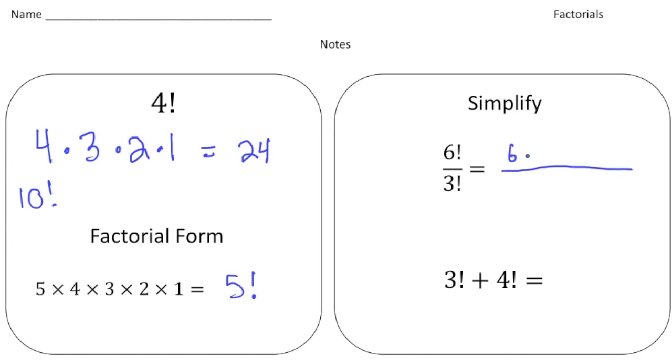So it's going to be 6 times 5 times 4 times 3 times 2 times 1, and then 3 factorial is 3 times 2 times 1. And because we have a fraction, these are actually common factors. So what you're allowed to do is you're allowed to actually cross off the 3, the 2, and the 1. And what's left over is this 6 times 5 times 4. So 6 times 5 is 30. 30 times 4 is 120. So the answer would be 120.